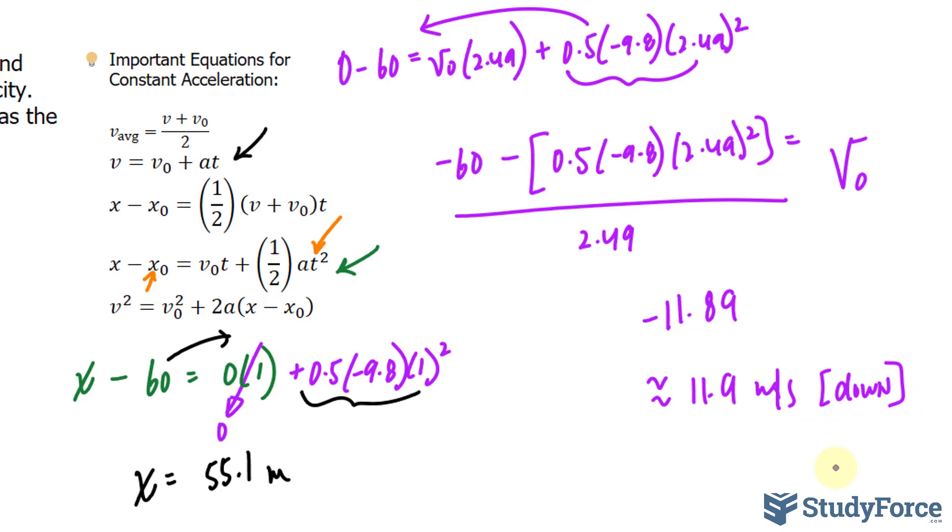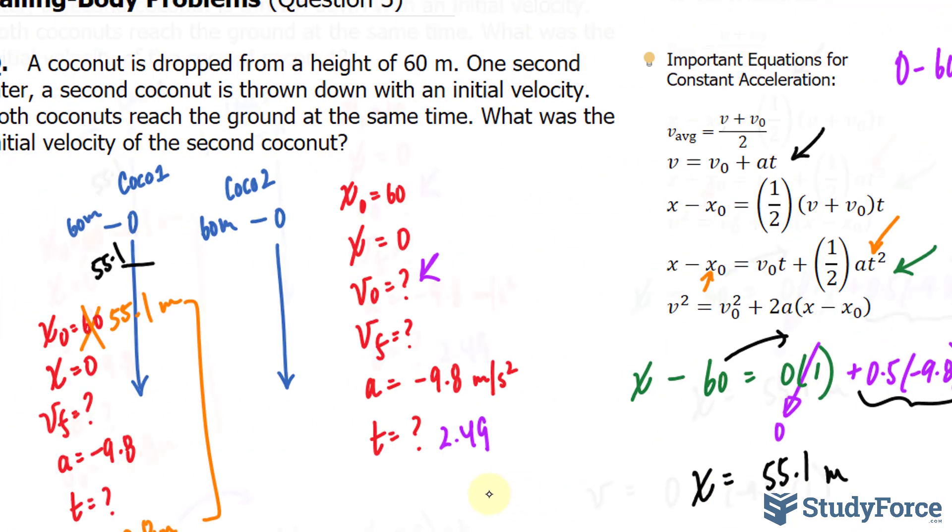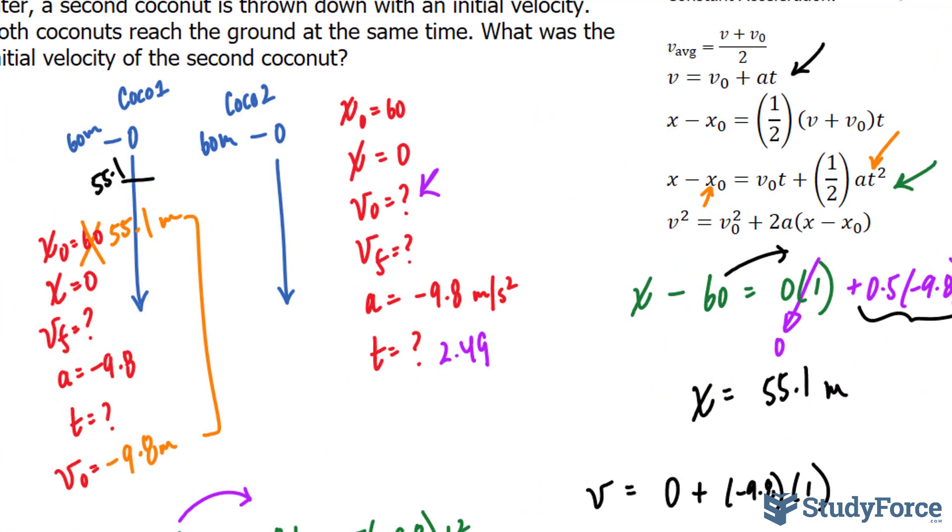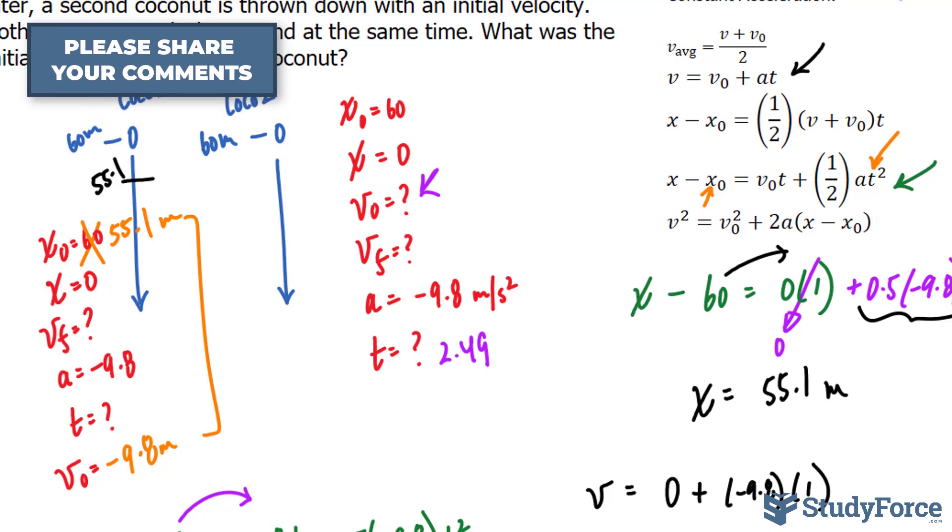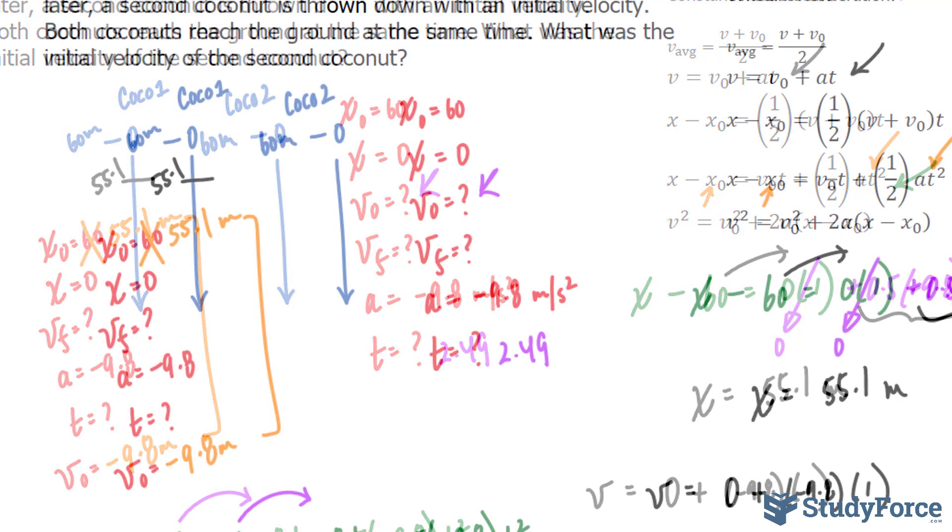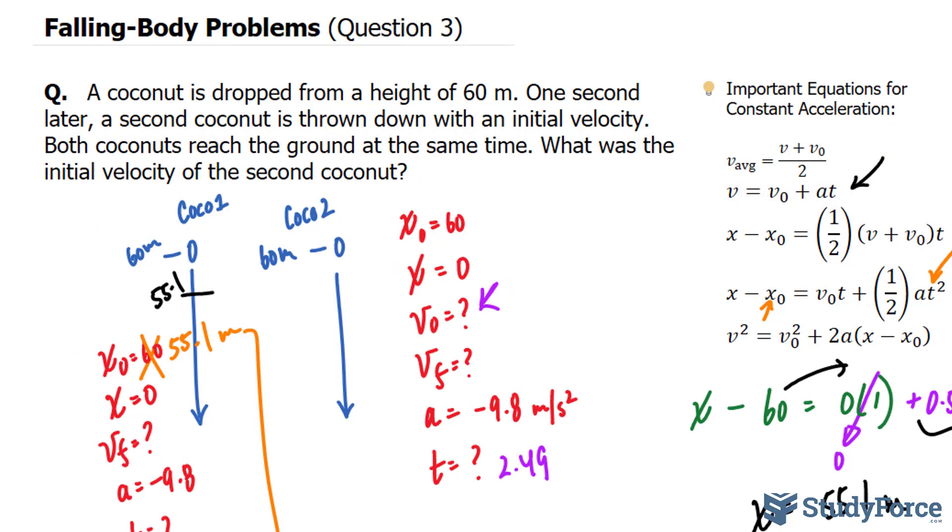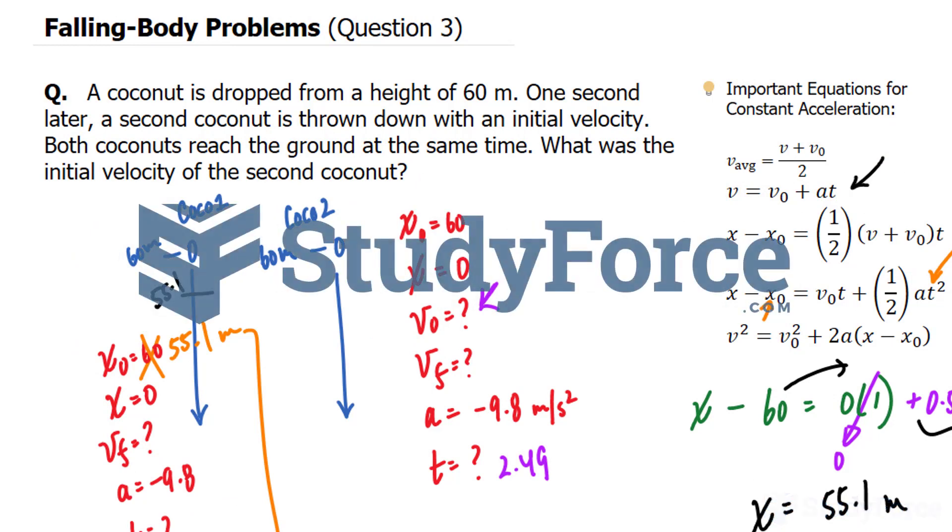So that second coconut was thrown at a speed of 11.9 meters per second, whereas the first coconut was thrown with no initial speed. And this is what led to them touching the ground at the same time. If you have any questions, please leave them in the comment section below or use our website shown on your screen. Thank you for watching.